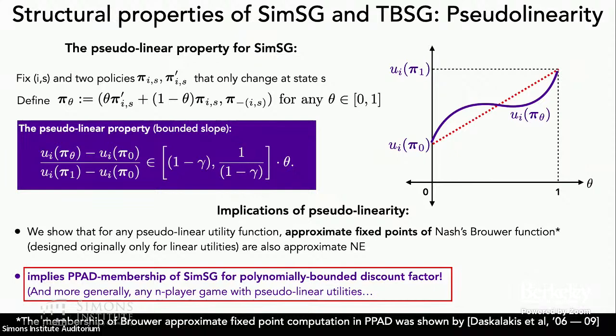What all of this implies is that the problem of equilibrium computation of stochastic games is not only PPAD hard but also lies in PPAD — for N players, S states, A actions, and a polynomially bounded discount factor. What I mean is that 1/(1-γ) is allowed to polynomially grow in the state space size and action space size. The pseudo-linear property is also useful on the flip side for understanding necessary conditions for a strategy to be an approximate Nash equilibrium.